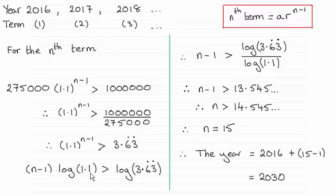So then I divide both sides by the log of 1.1, and notice the inequality sign doesn't reverse because the log of 1.1 is a positive value. Remember, the log of any number over 1 is always going to be positive.